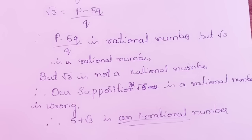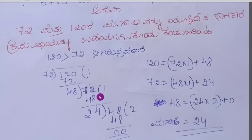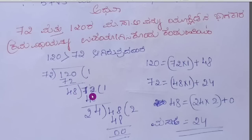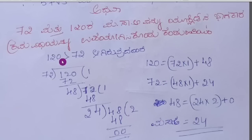Eighteenth question: find the HCF of 72 and 120 using Euclid's division algorithm. Since 120 > 72: 120 = 72 × 1 + 48; then 72 = 48 × 1 + 24; then 48 = 24 × 2 + 0. Therefore, the HCF of 120 and 72 is 24.